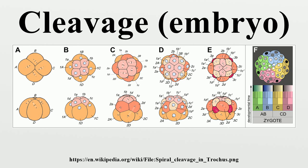Rotational: Mammals display rotational cleavage and an isolecithal distribution of yolk. Because the cells have only a small amount of yolk, they require immediate implantation onto the uterine wall in order to receive nutrients. Rotational cleavage involves a normal first division along the meridional axis, giving rise to two daughter cells. The way in which this cleavage differs is that one of the daughter cells divides meridionally, whilst the other divides equatorially.